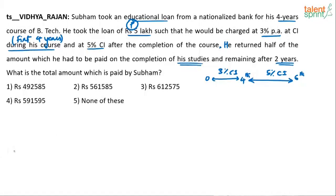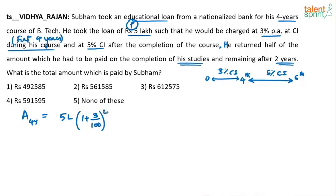So how do you solve this? What is the total amount paid by Shubham — what did he pay over the total six years? The total amount at the end of four years — you know the formula: P into (1 + R/100) to the power T. So the total amount at the end of four years is 5 lakhs into (1 + 3/100) to the power 4.